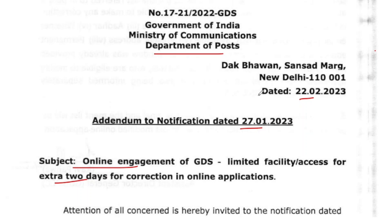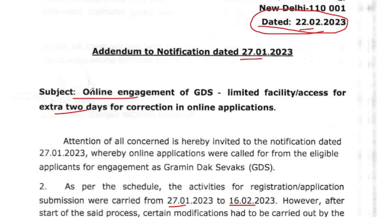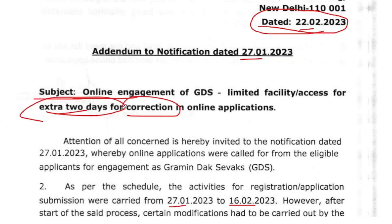You can see that on the 22nd February 2013, the GDS Limited Facility Access for Extra 2 Days for Corrections in Online Applications is available. You can see that the GDS will be given 2 extra days for corrections.